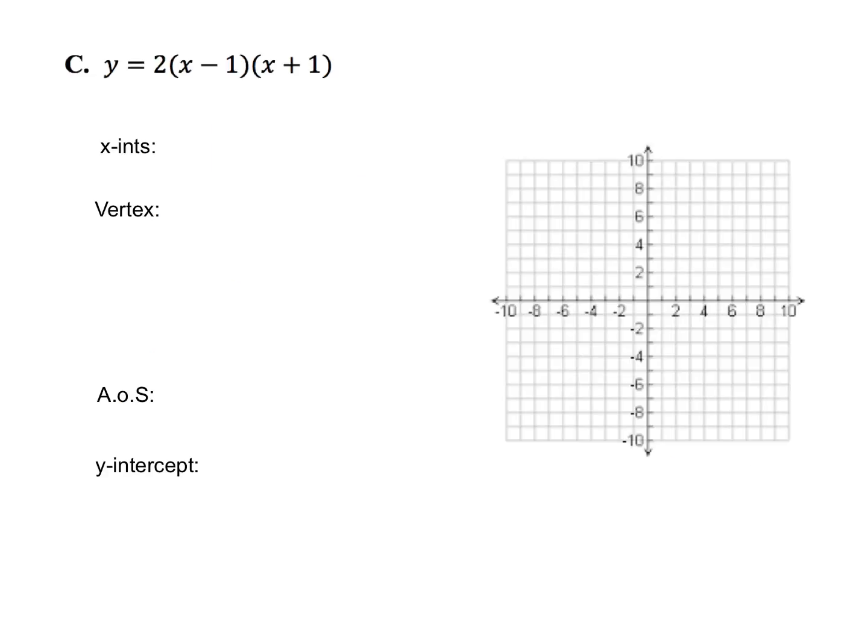For part c, we have another equation in vertex form. Notice this time the a is 2. Remember, that 2 is going to do a couple of things. Because it's positive, we know that the graph is going to open up. But we also know, since the absolute value of a is above 1, we know that the graph is going to get narrower. It's going to be vertically stretched. It's going to go up quicker. As usual, we'll start by finding the x-intercepts. Remember, that's just the zeros of the factors. You can take each of the two factors and set them equal to 0.